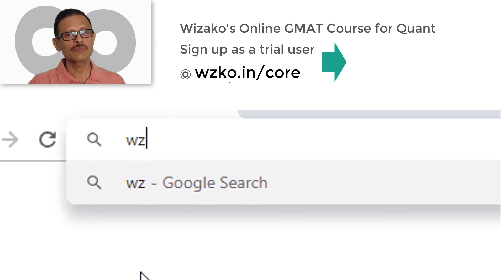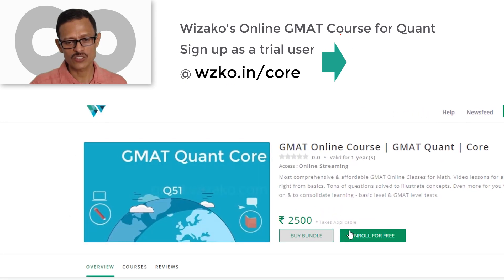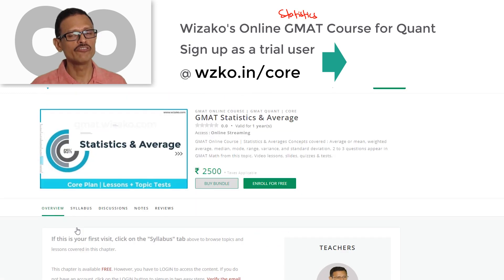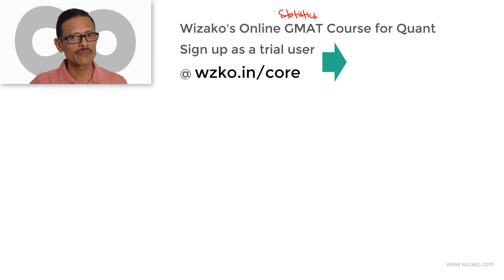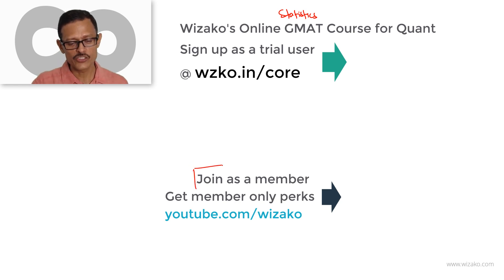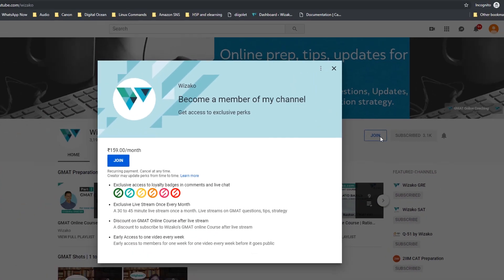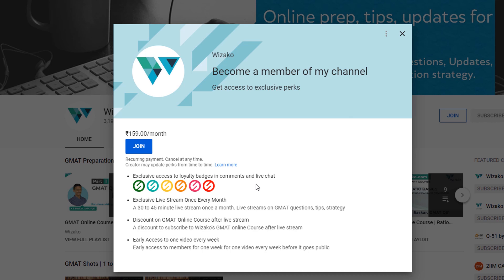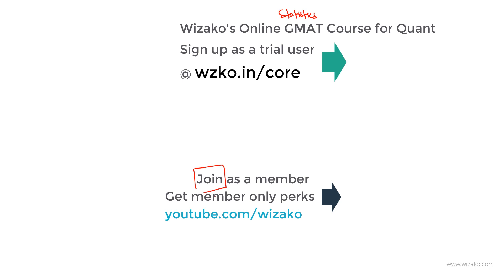Before you leave, do a couple of things. One, sign up as a trial user at wzko.in/core. Get started with this topic, statistics. That's a free topic. Statistics on average is a very good topic to kickstart your GMAT preparation. Once you've completed that, once you're used to the teaching methodology UI UX, sign up, pay up and get other topics unlocked. Two other things: subscribe to this channel youtube.com/wizako so that you'll get notified of all new videos. Lastly, you can join as a member of this channel by paying a small monthly fee to YouTube every month. There are certain member-only perks available. To know what those perks are, click on the join button on the home page of the channel. Best wishes for your GMAT preparation.